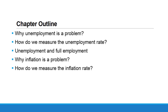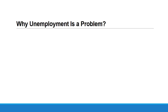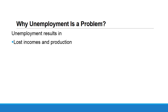Let's start our chapter with the first part, which is unemployment. We are going to ask ourselves: why unemployment is a problem? Why having a high unemployment rate is not considered an advantage for any economy? Unemployment results in two main costs. Number one: lost incomes and production. Number two: lost human capital.